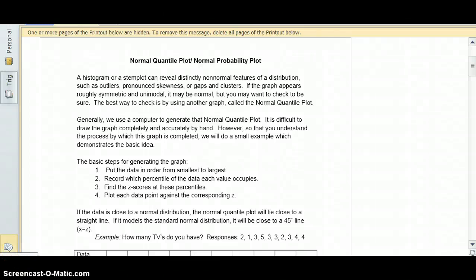A histogram or stemplot can reveal distinctly non-normal features of a distribution, such as outliers, pronounced skewness, or gaps and clusters. If the graph appears roughly symmetric and unimodal, it may be normal, but you may want to check to be sure. The best way to check is by using another graph called the normal quantile plot, also known as a normal probability plot.